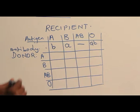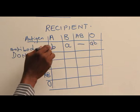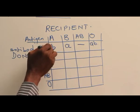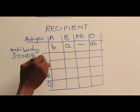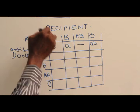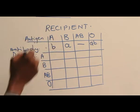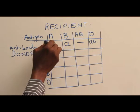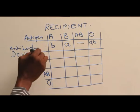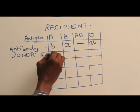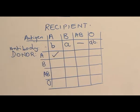How do we know? Because antibody is the instrument the recipient or the patient has to fight the antigen that is coming to this body. And antibody B cannot attack antigen A. So this blood transfusion will succeed.